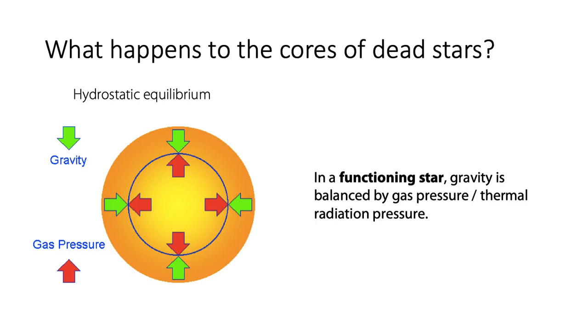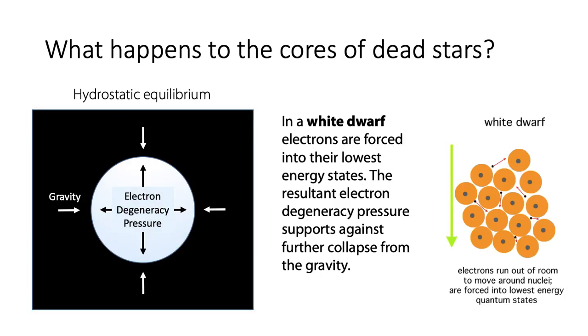In a star's case, this hydrostatic equilibrium, in the case of a functioning star, a normal star, the outside pressure is caused by the gas pressure and the radiation pressure coming from the core of the star. But when you have a white dwarf star, that doesn't happen. Instead, in a white dwarf star, the electrons, the atoms are squeezed as close together as they possibly can be. And instead of radiation pressure, what supports the size of the star is something called electron degeneracy pressure.